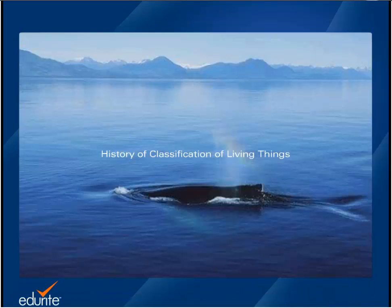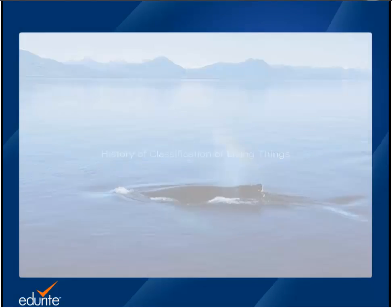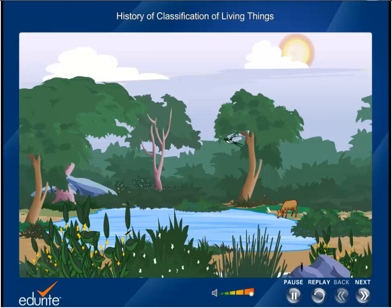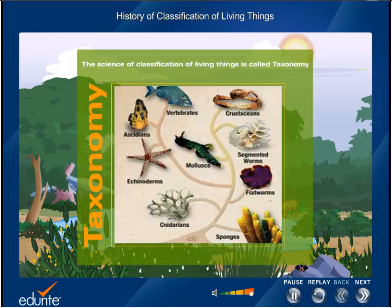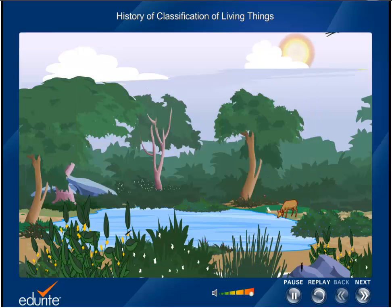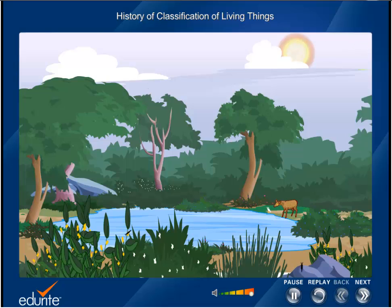History of classification of living things. The science of classification of living things is called taxonomy. Classification helps in logical grouping of living things and thus simplifies the study of these diverse organisms. It also shows the interrelationship between organisms and lays the foundation for applied biological sciences.